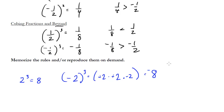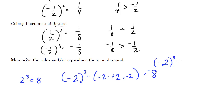So negative 2 cubed is smaller than negative 2. Negative 2 is bigger than its cube because the cube becomes more negative. Again, you don't have to memorize the rules — just reproduce them when you need them.